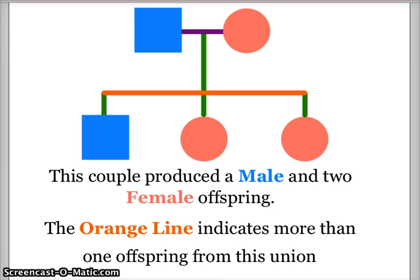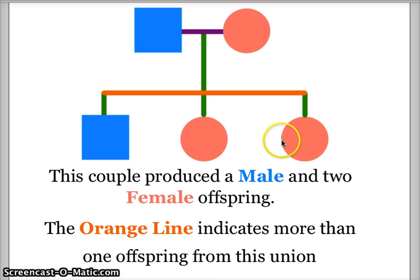If a mating results in more than one offspring, there will be a connection line like this orange line here. This orange line indicates that all three of these individuals are offspring of the original parents. So these parents mated and produced a son — a male offspring — and two daughters, two female offspring.